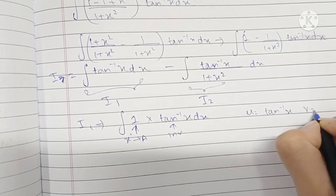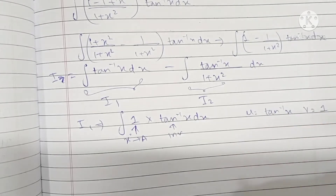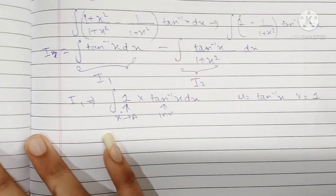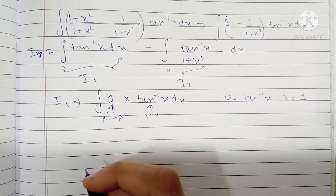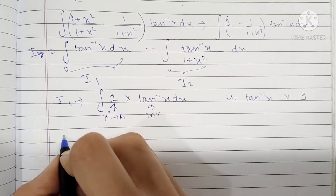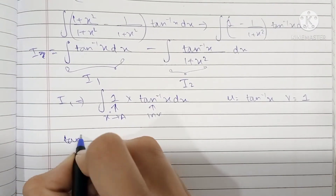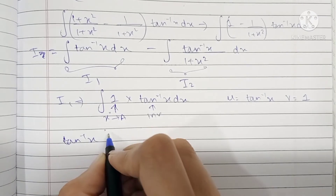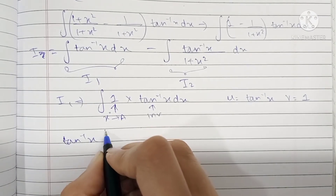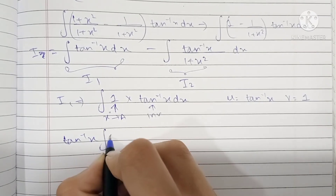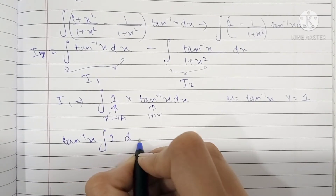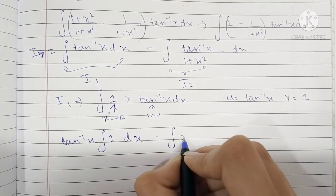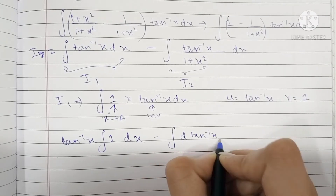Now let's replace these in the formula. We have u · ∫v dx − ∫(du/dx · ∫v dx) dx. The integration of v = 1 with respect to x is x.